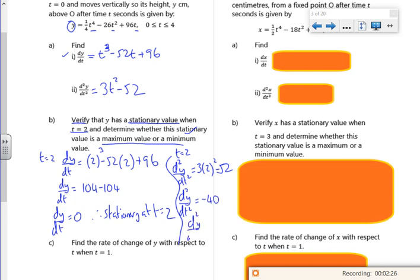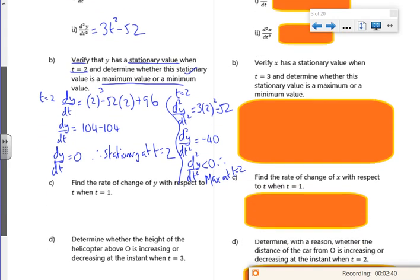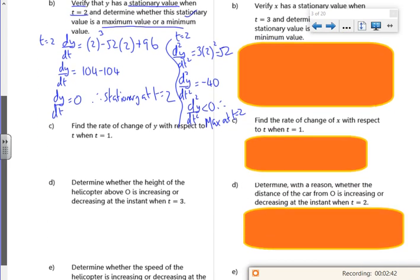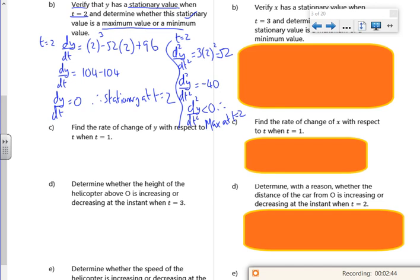So d2y by dt squared is less than 0, therefore it's a max at t is 2. So t is 2, it's got to the top, hasn't it? It's got as high as it's going. That's what it's saying at t is 2, it's got as high as it can go. That looks very messy, I'm very sorry.